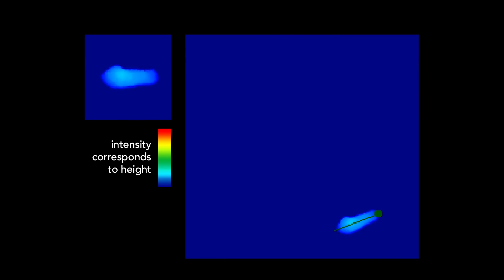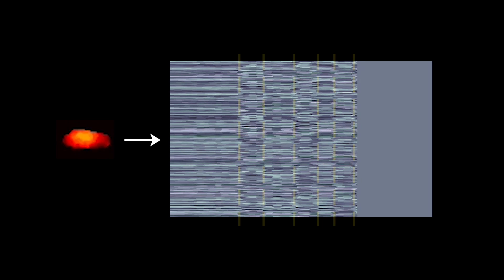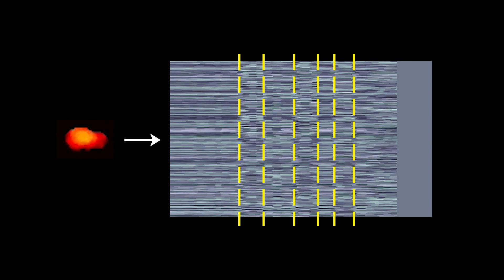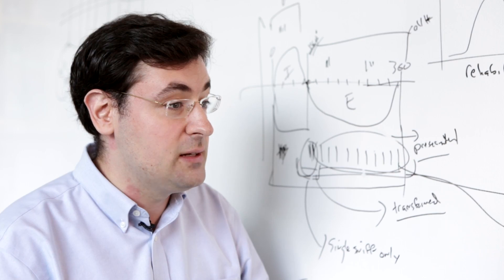We can now pretend like that data stream is just spoken language and feed it to algorithms that we ordinarily use to discover the parts of speech in some foreign language. What we do is we try to discover what the syllables are, or the repeated motifs of action are, inside of that data stream.